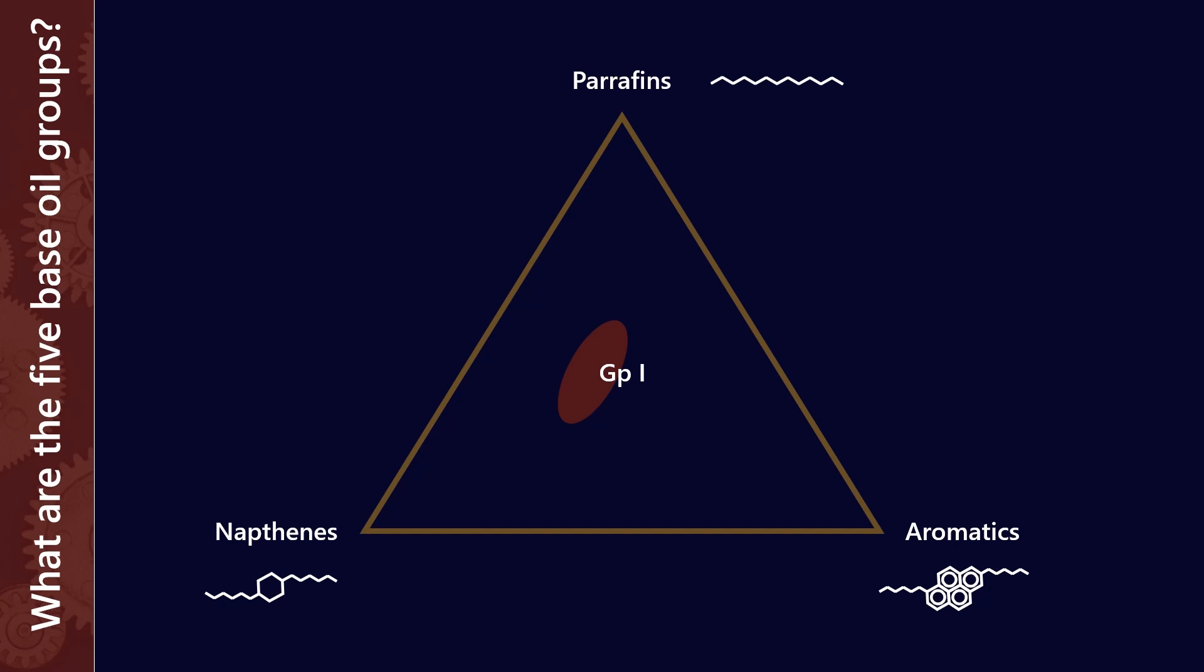As we more heavily refine it and we remove some of those aromatics and we convert some of the naphthenes into paraffins, we move to group 2 base oils. Then, as we heavily refine it again through more severe hydroprocessing, we end up with group 3s. And finally, group 4s, or the PAOs, are fully paraffinic. So by definition, they are made from molecules which are paraffins and you end up with a finished lubricant which is 100% paraffinic. So that's where the group 4s, also known as the PAOs, sit.